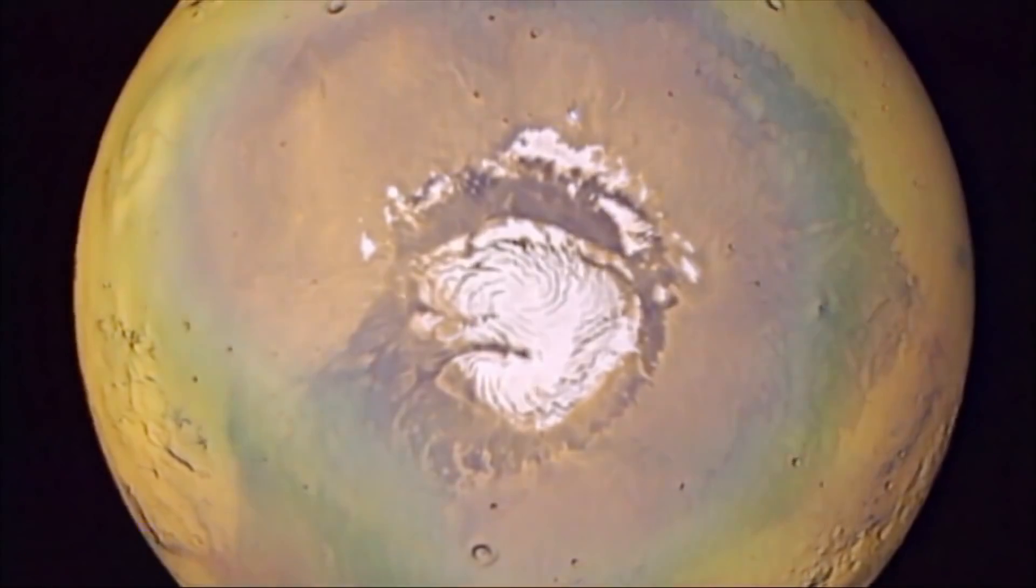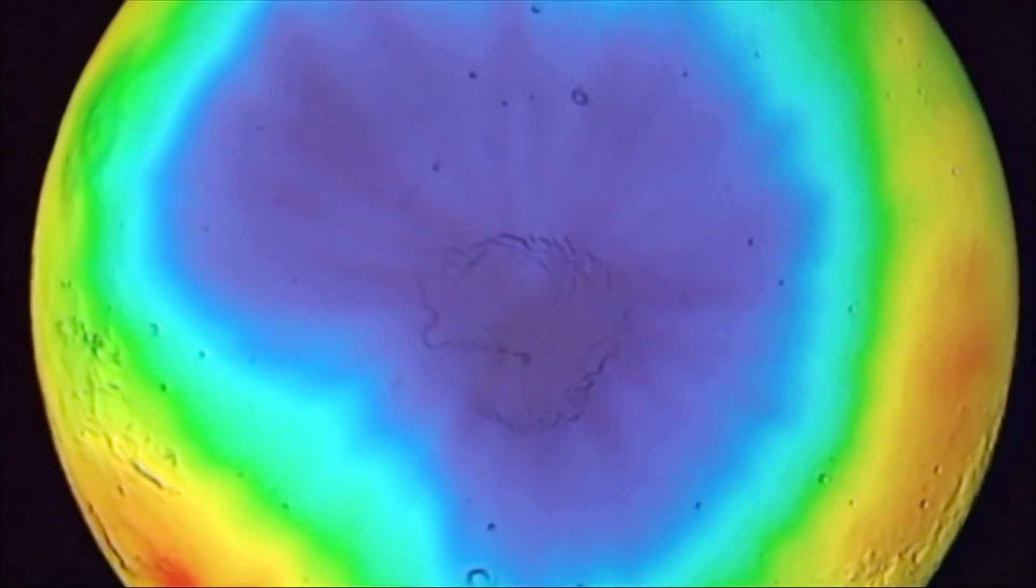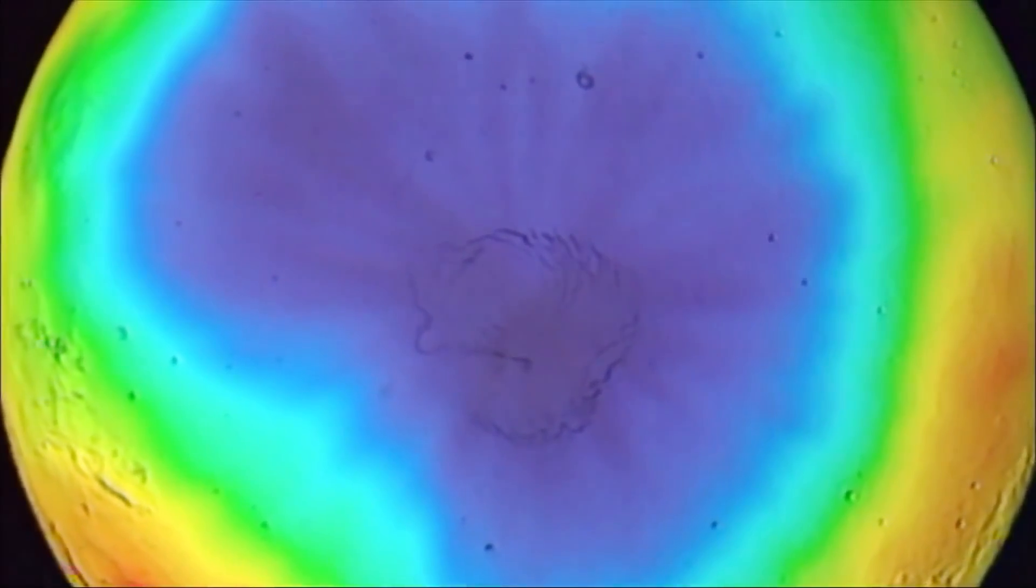But there's evidence that beneath the ice liquid water still flows. Much of the water on Mars has gone underground and some of it certainly has migrated down to a depth where it's warm enough for it to exist as liquid water.